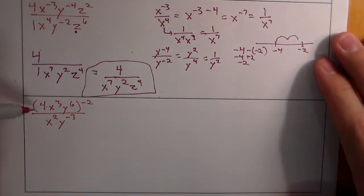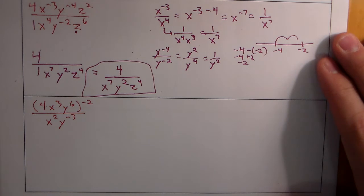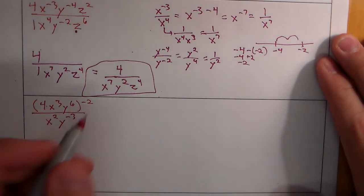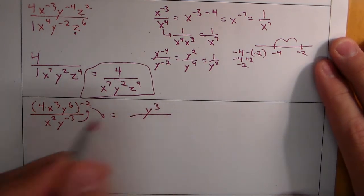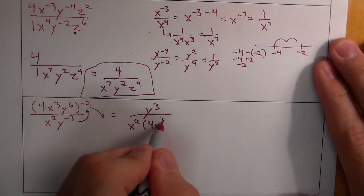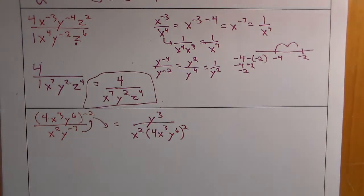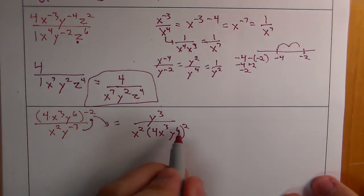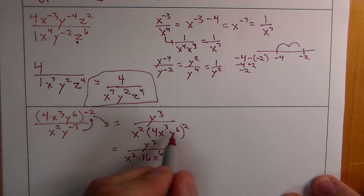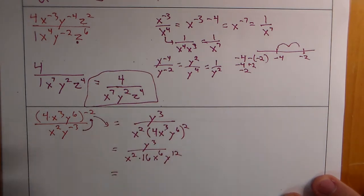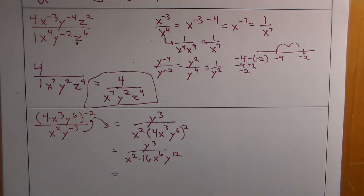Next, we have 4x to the third y to the sixth, all to the quantity of negative 2, times x squared and y to the negative 3. First, handle the negative exponents: the whole term with the negative 2 moves underneath the fraction, and y to the negative 3 moves up to become y to the third. Now apply the power rule: 4 squared is 16, x to the third squared is x to the sixth, and y to the sixth squared is y to the twelfth. Then combine the x's and y's and ensure all exponents are positive.